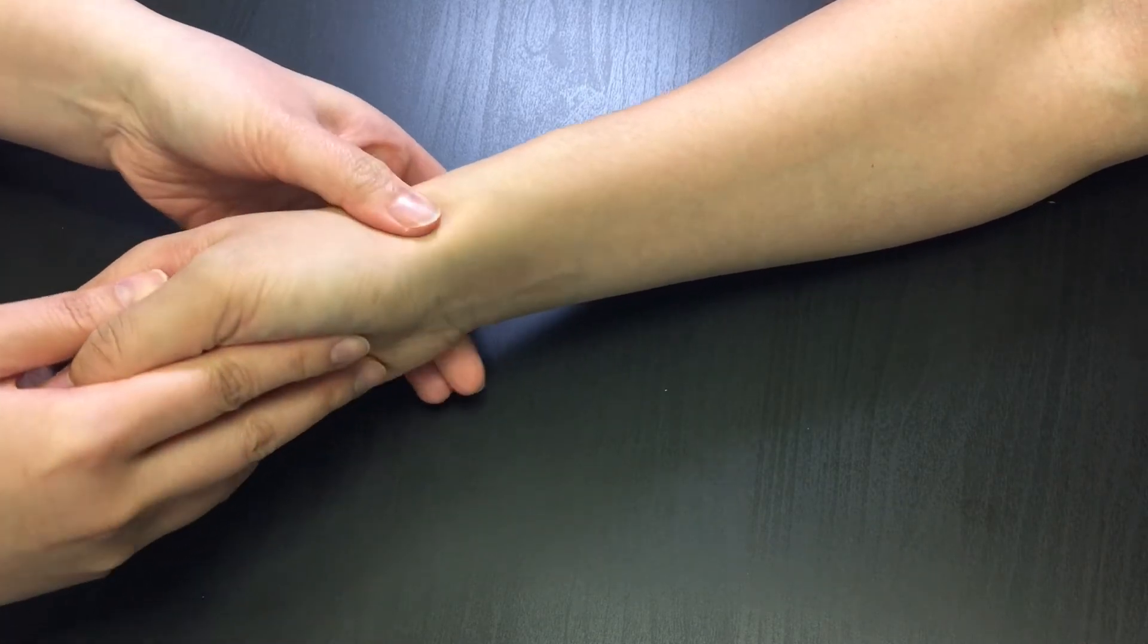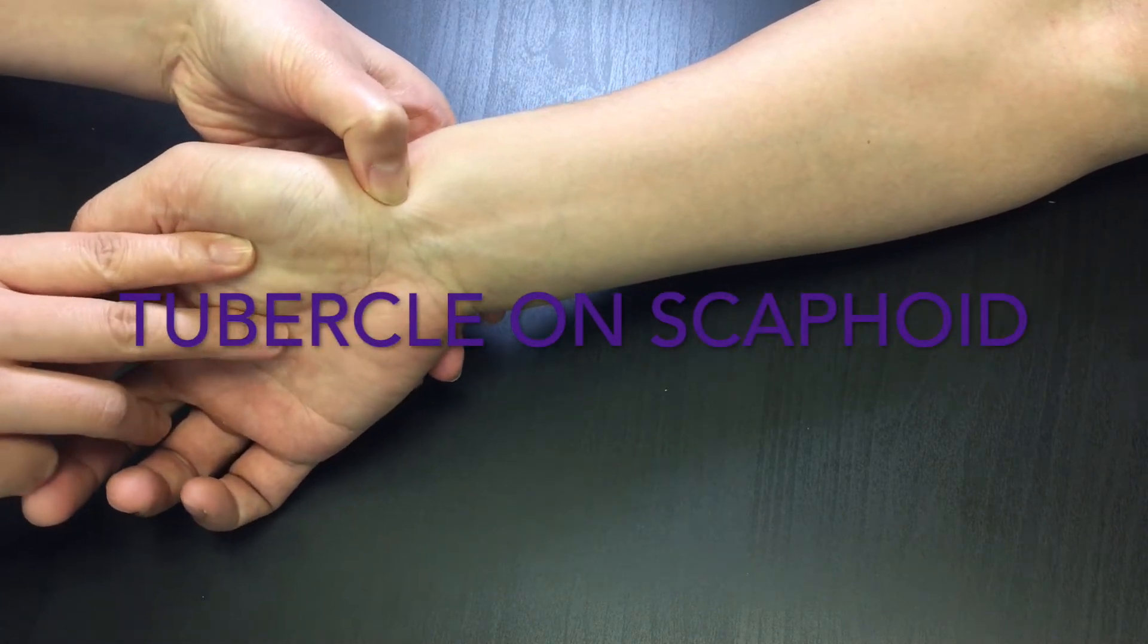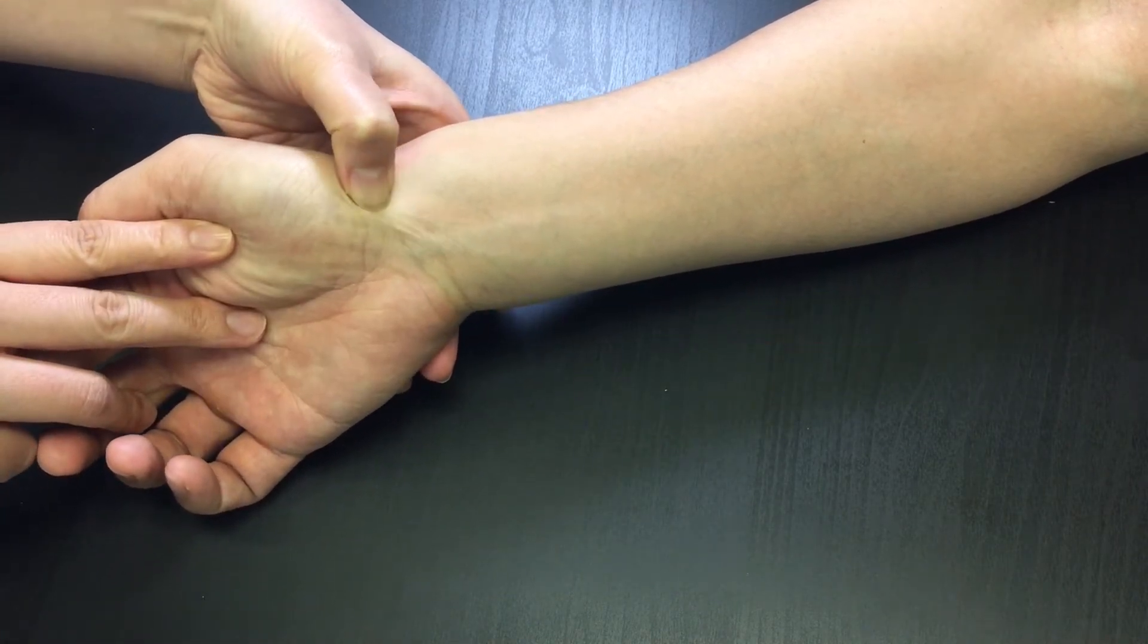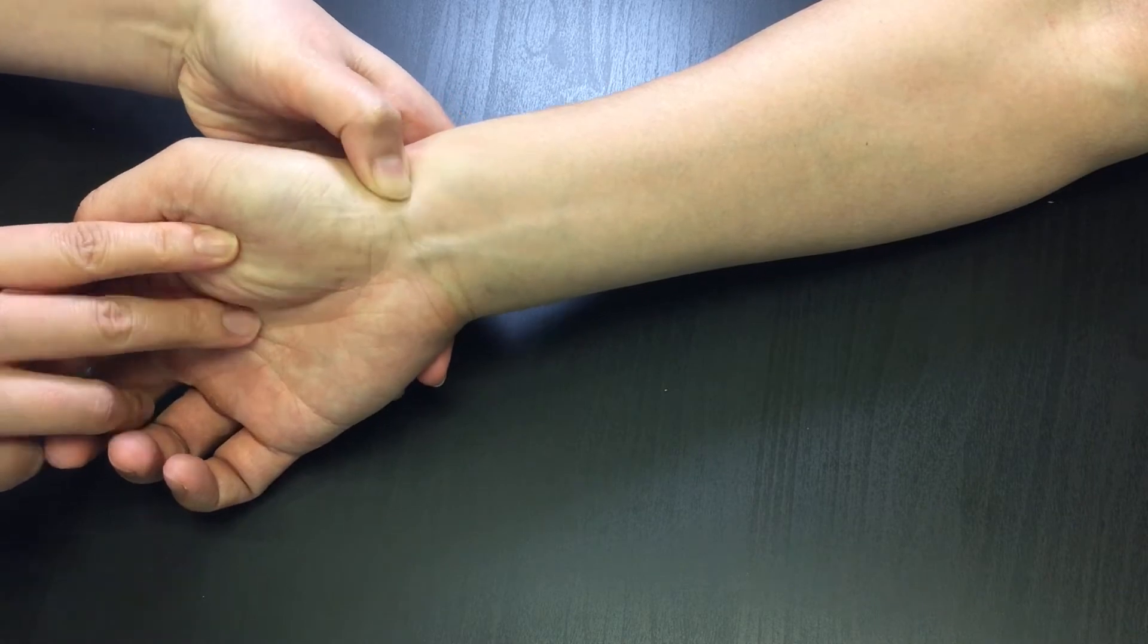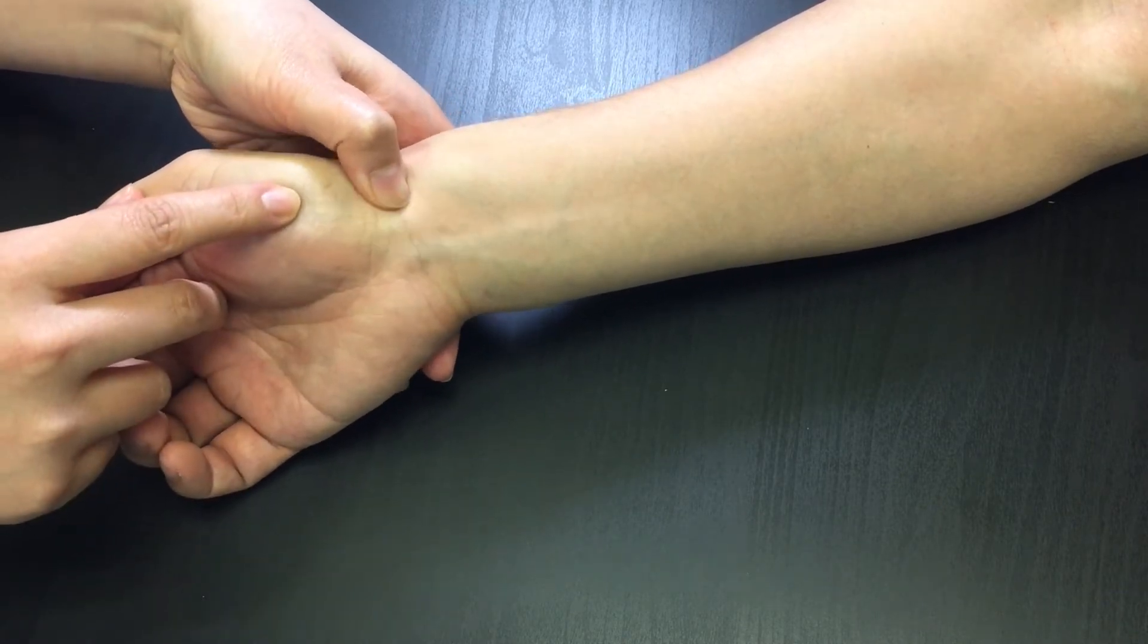From the lateral side of the scaphoid, move about 1.5 to 1 cm anteriorly. You can find its tubercle on the palmar side of scaphoid along the flexor crease.